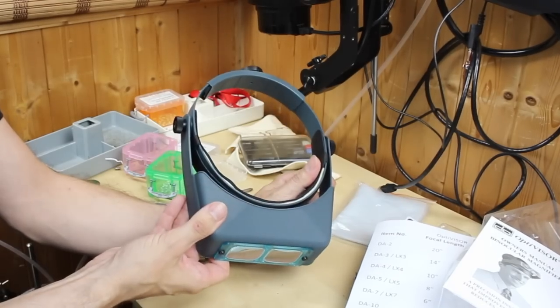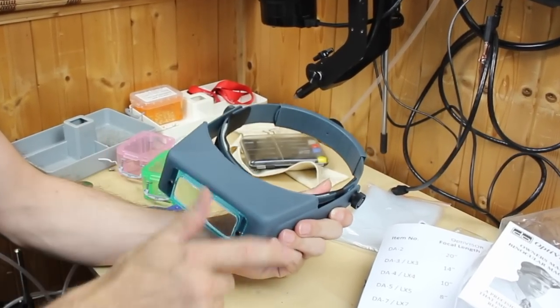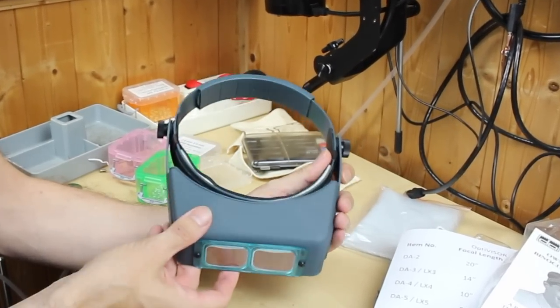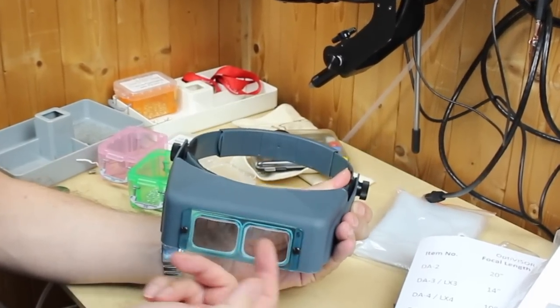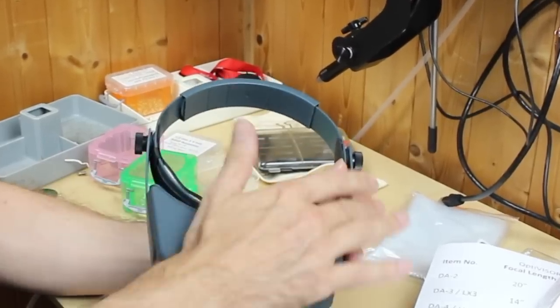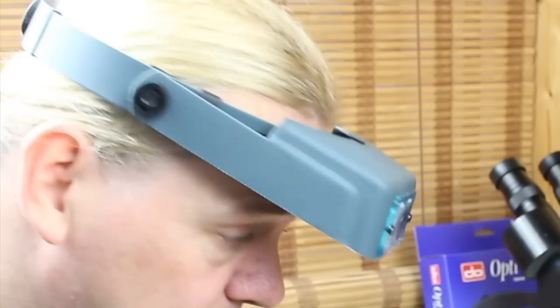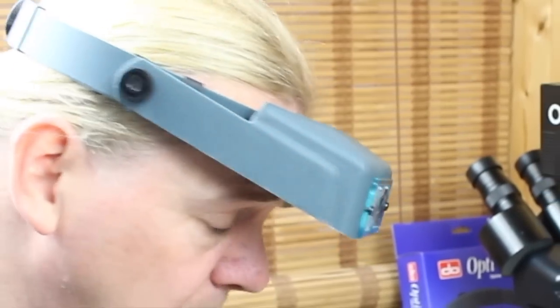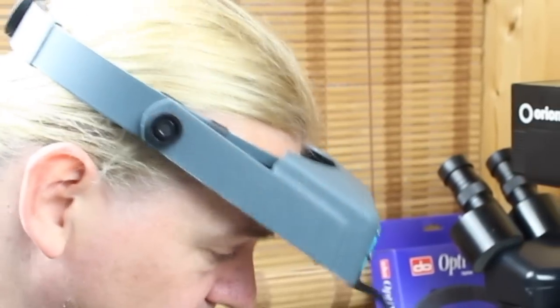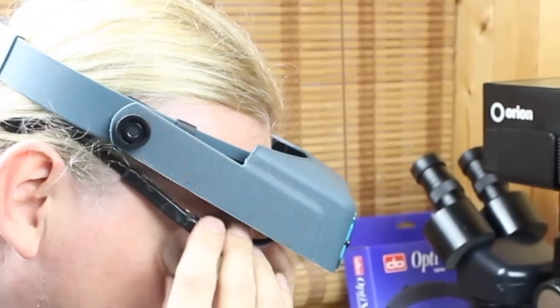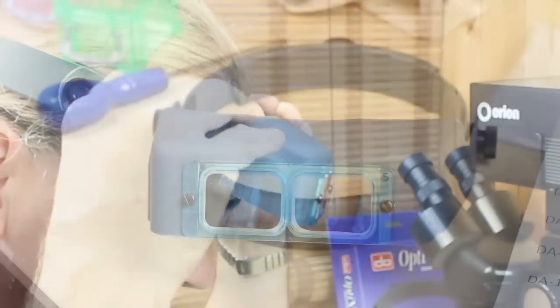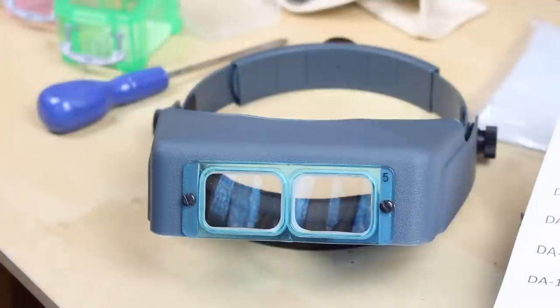The Optivisor is made of tough ABS plastic and it will last a lifetime. But remember, it's an aid to vision, it's not intended as a safety device. But the off-face design means that you can still wear your normal spectacles or safety glasses exactly as normal.